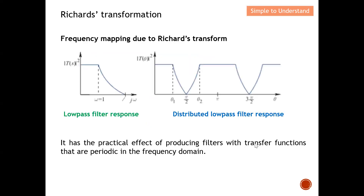Finally, regarding frequency mapping due to Richard's transformation: a lumped low pass filter has a standard low pass response; however, once you transform it into distributed elements using Richard's transformation, the response becomes periodic. This has the practical effect of producing a filter with a transfer function that is periodic in the frequency domain. So one important thing to note is that your low pass filter will become periodic in the frequency domain after applying Richard's transformation.